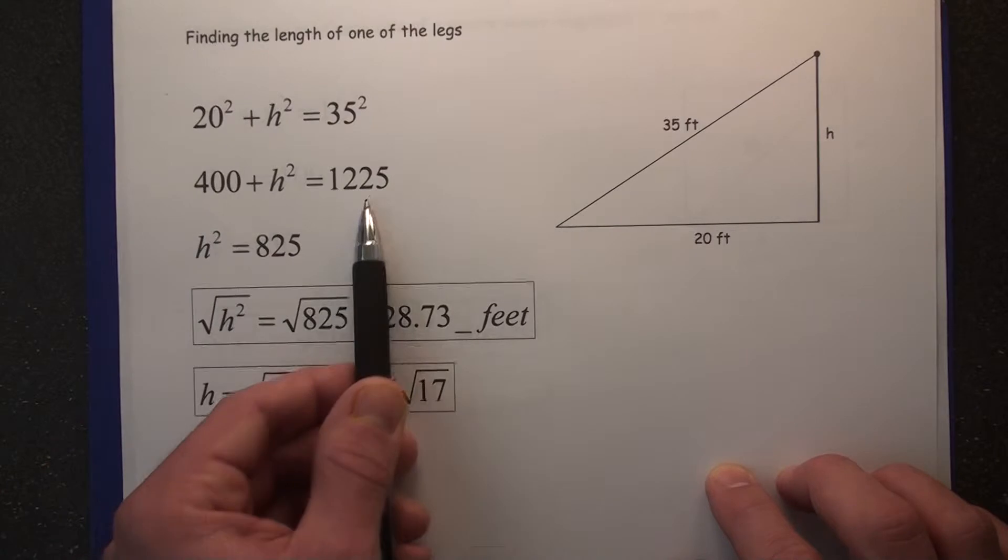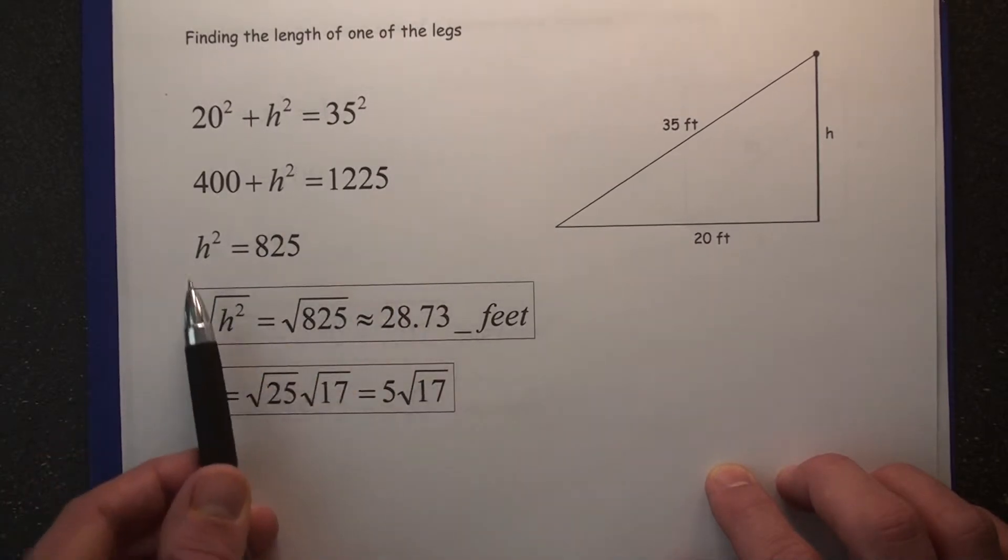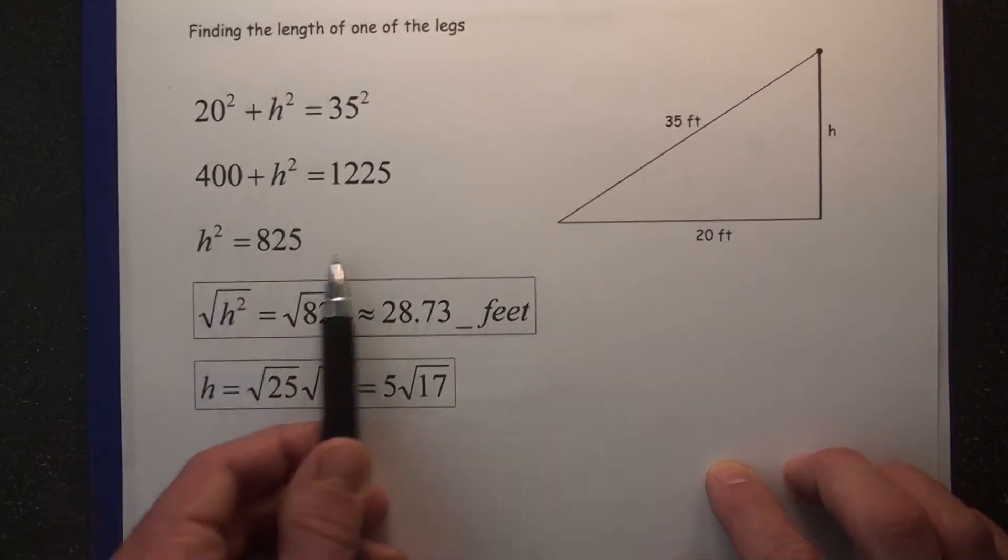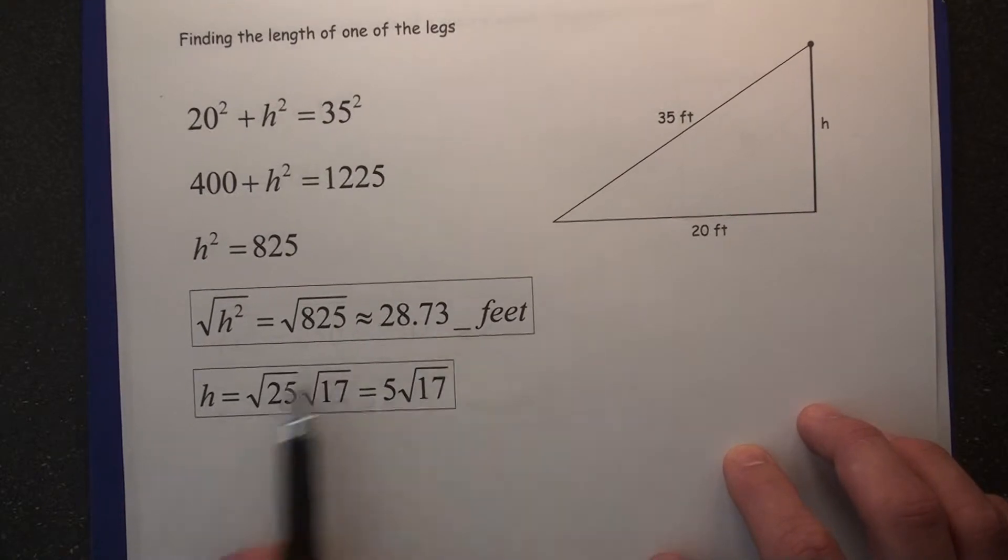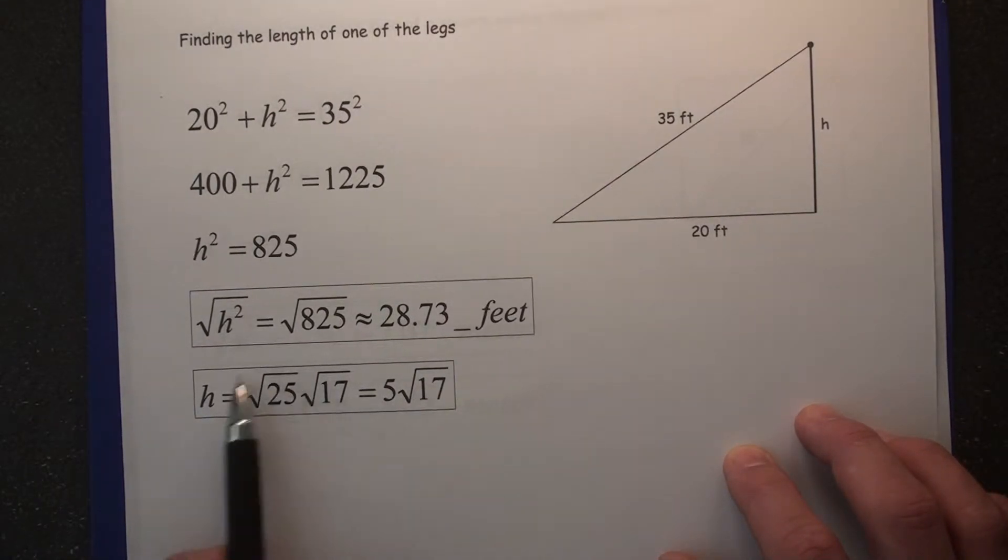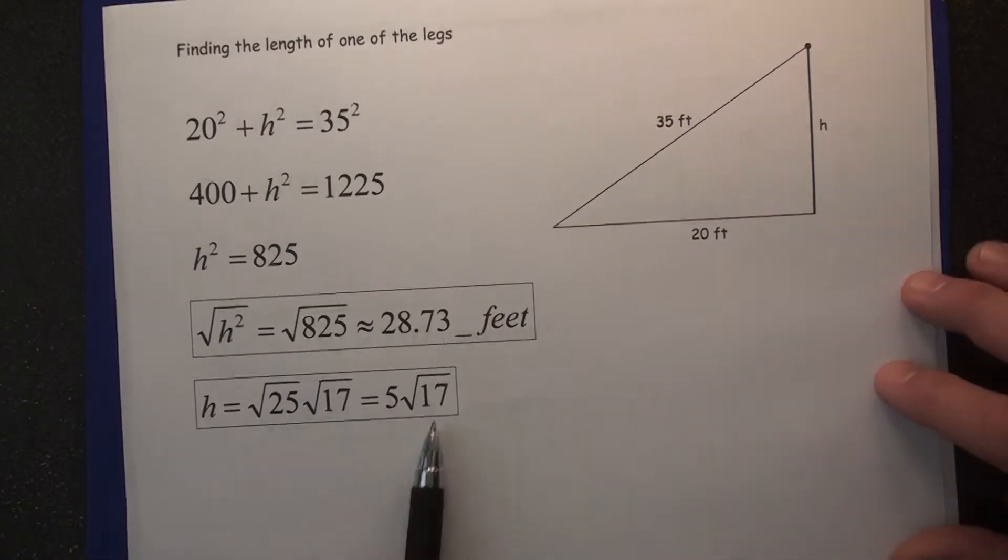So you're going to subtract 400 on both sides. Square root of both sides here gives us 28.73. Otherwise, you can simplify the radical and put down 5 root 17 because root 25 and root 17 would give us this.